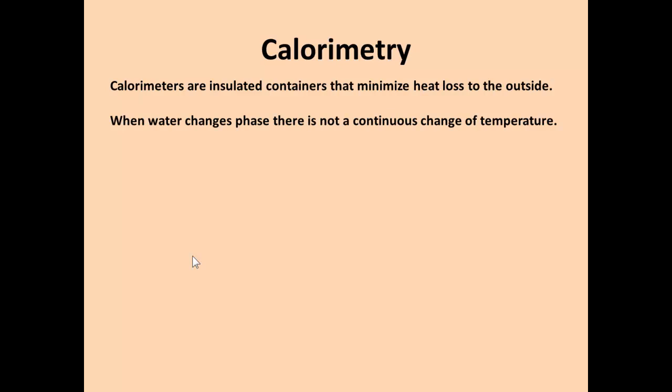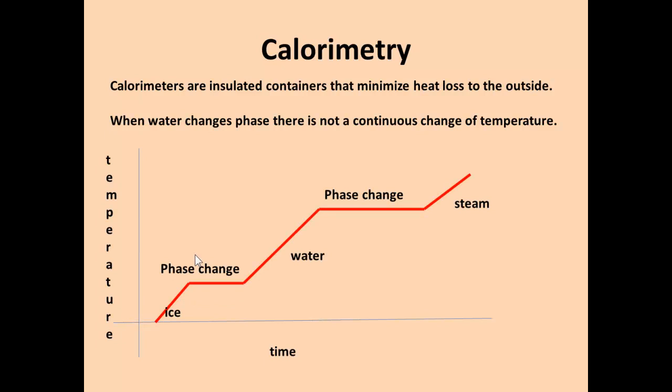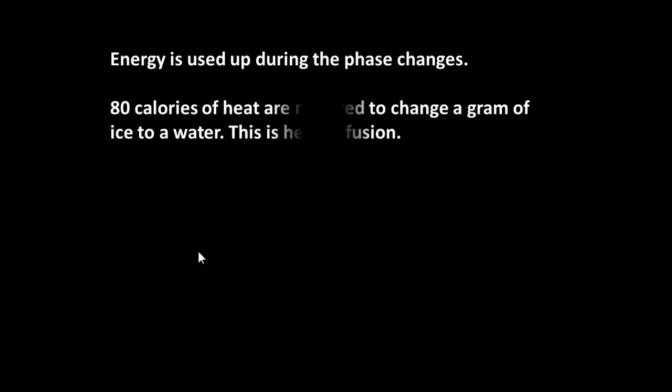Calorimetry is when you try to record the amount of heat concerned with what happens when water changes phase. Calorimeters are insulated containers that minimize heat loss to the outside. One of the things you notice is that while the phase change is actually occurring, there isn't a continuous change of temperature. You've got some ice, you keep heating it, and the temperature keeps going up until it starts melting and turning to water. Then the temperature remains the same until it's turned to water. Keep going with the water, and you'll reach a point where it boils and starts turning to steam or water vapor. Again, the temperature remains constant while that phase change is occurring. Energy must be used up during these phase changes.